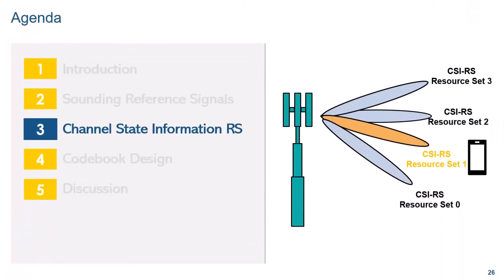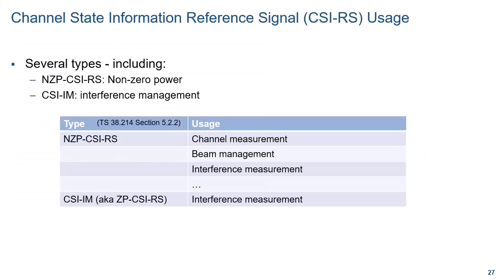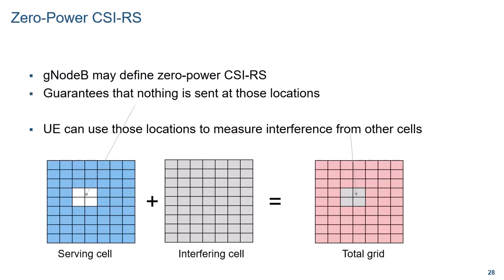Now let's have a look at the channel state information reference signals. CSIRS are multi-faceted — some of them don't even exist, or rather they have zero power. CSIRS are used for beam management, interference measurement, and channel measurement, among others. Here we will focus on channel measurement. A quick word about zero power CSIRS for interference management: those correspond to locations that the base station reserves to have no power, enabling the UE to measure the intercell interference level, as the only energy at those locations comes from surrounding base stations.